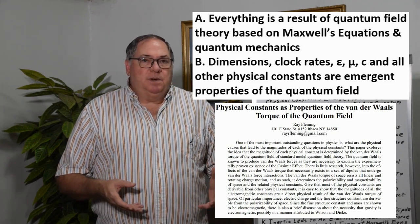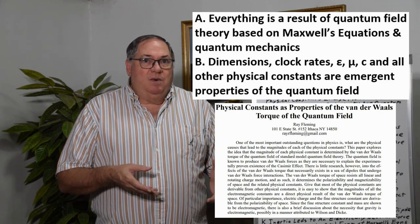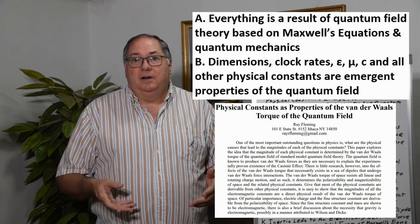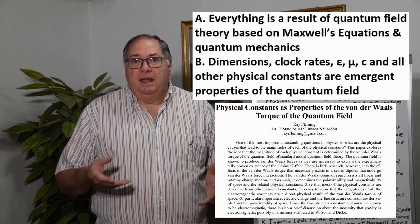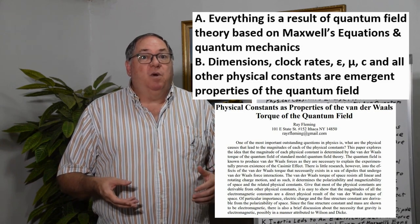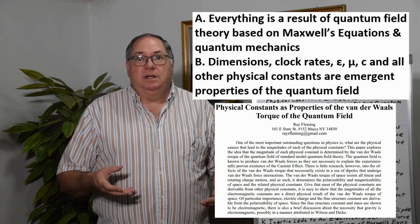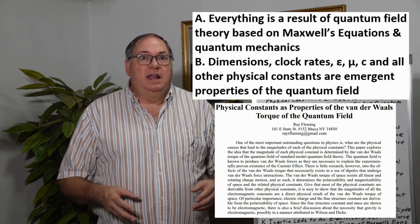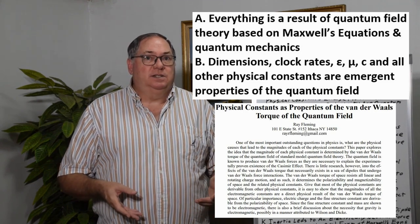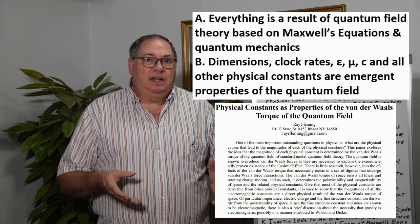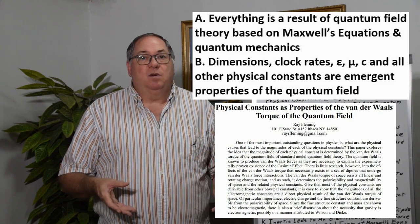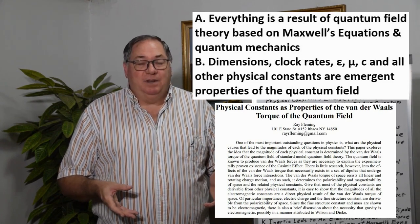That happens because quantum fluctuations have wavelengths and frequencies. From the Casimir effect, there are electric charge dipoles which behave due to Van der Waals forces and torque. This torque limits their motion, both linear and angular, the rate of rotation. That actually determines the wavelengths and frequencies. So the wavelengths and frequencies determine the dimensions and clock rates of the quantum field. They don't come from space. They're from the quantum field.